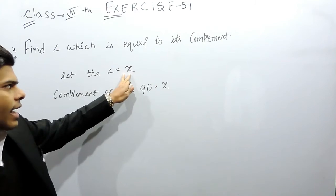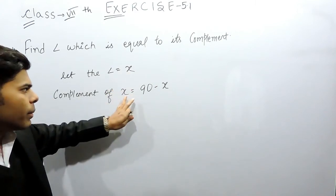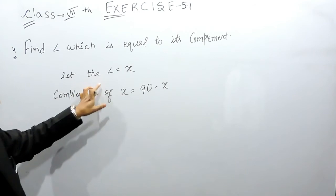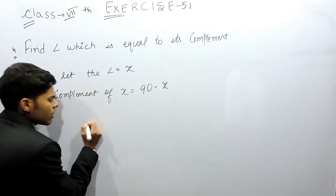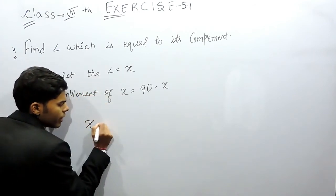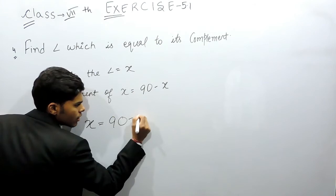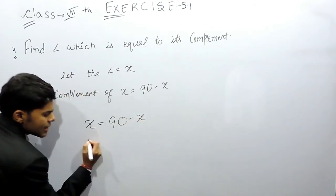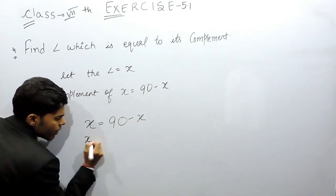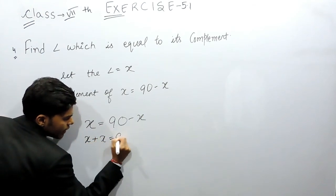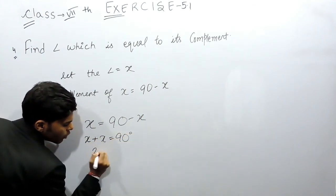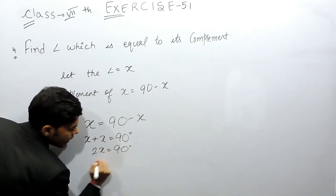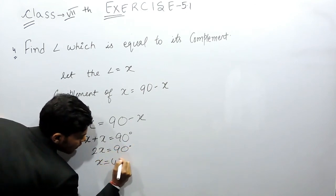So if the first angle is x and the complement of x is 90 minus x, and we are given that these two are equal, then x equals 90 minus x. This x when it comes to the left-hand side becomes plus x, so x plus x equals 90 degrees. This means 2x equals 90 degrees, and x equals 45 degrees.